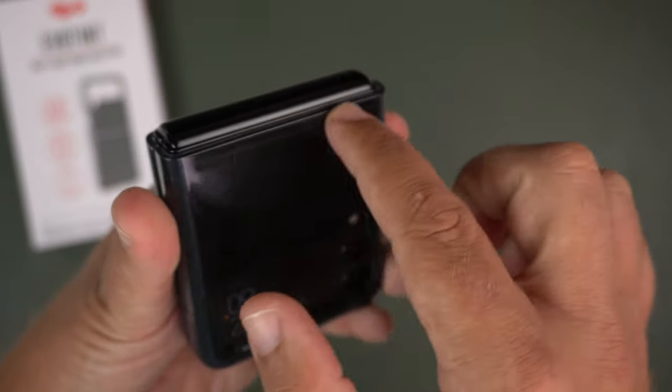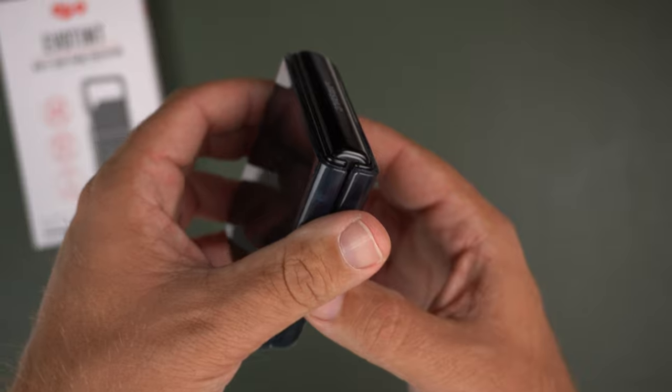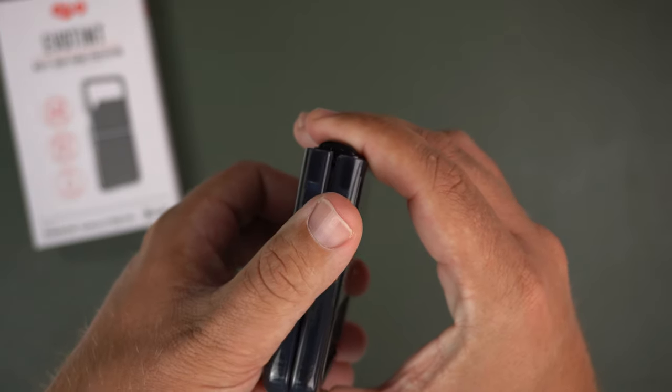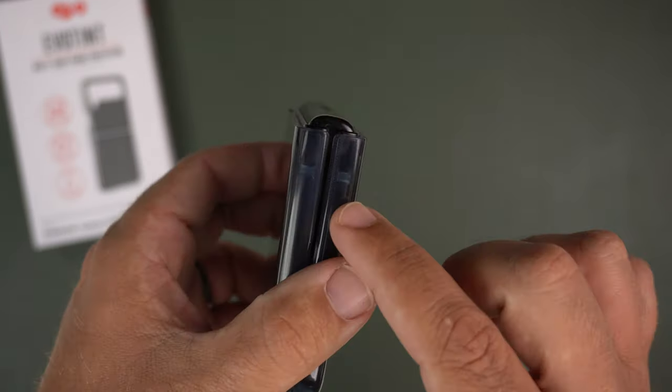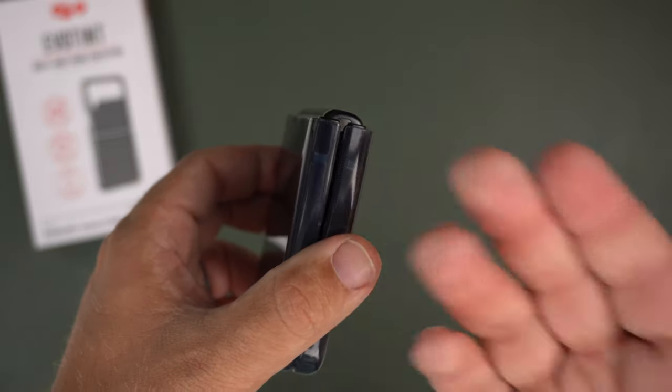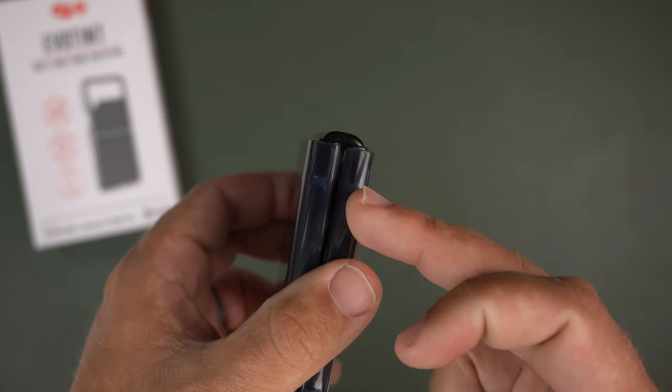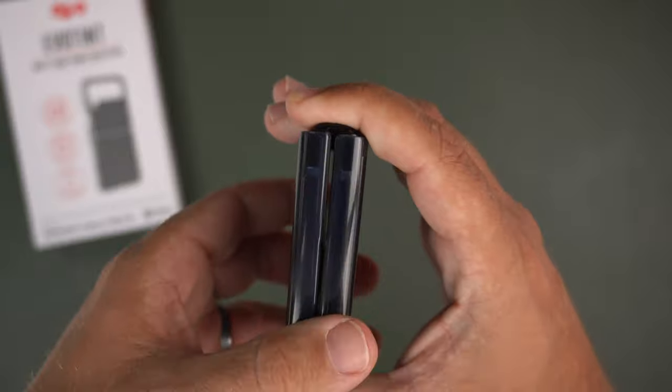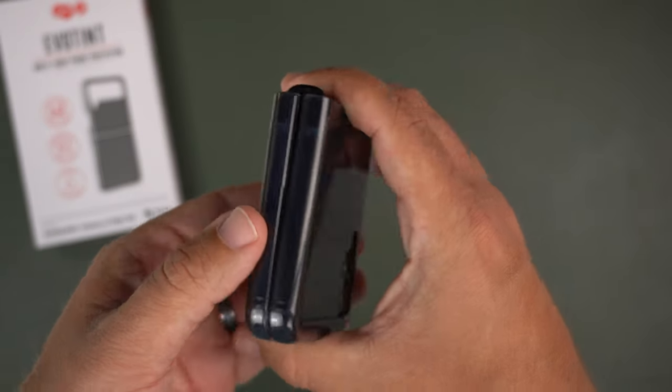You might want to take those adhesive strips off if you plan on keeping the case on longer, because that'll keep it in place. I've noticed with a lot of Z Flip 3 phone cases I've had to push up a little bit occasionally so the gap isn't as big, especially when I'm holding the phone.